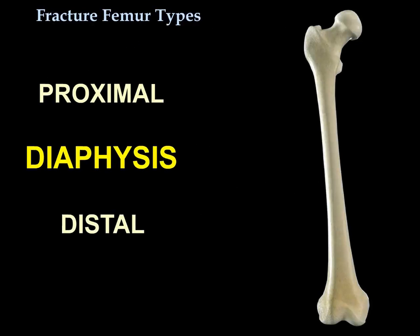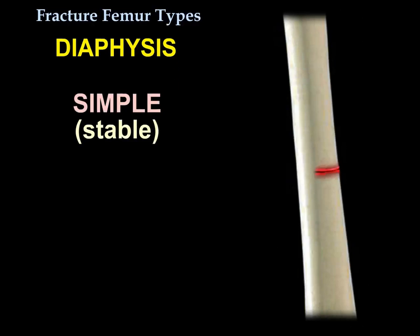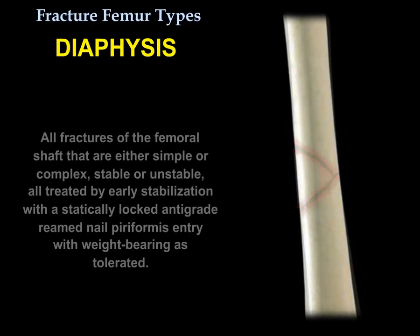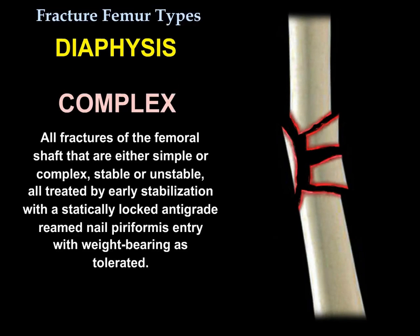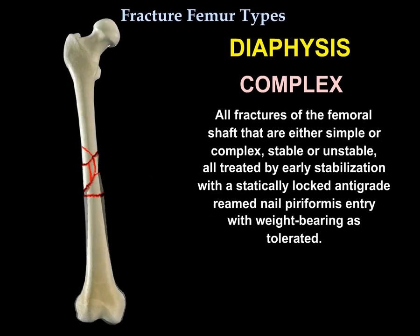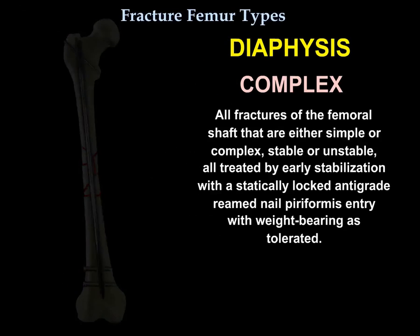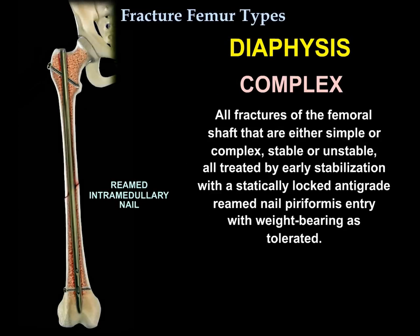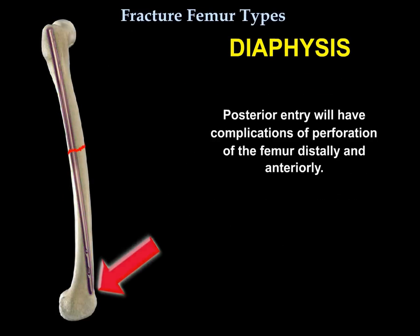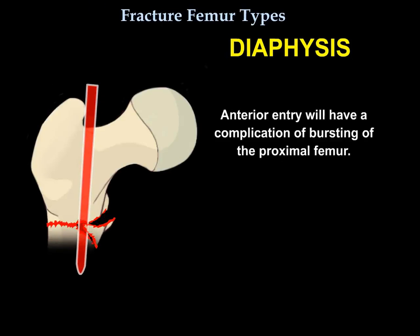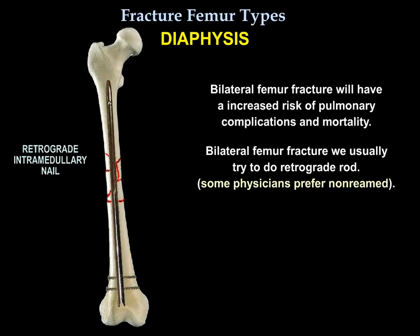For diaphyseal femur fractures, they range from simple to butterfly to complex, but the pattern is not critical because all femoral shaft fractures — simple or complex, stable or unstable — are treated by early stabilization with statically locked antegrade reamed nailing with piriformis entry, with weight bearing as tolerated. Posterior entry risks perforation distally; anterior entry risks bursting of the proximal femur. For bilateral femur fractures, retrograde nailing is usually preferred.